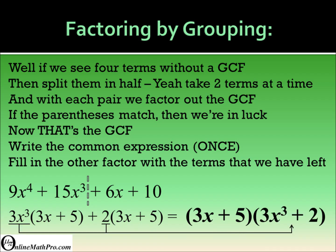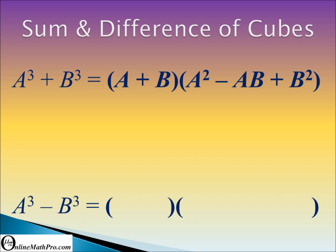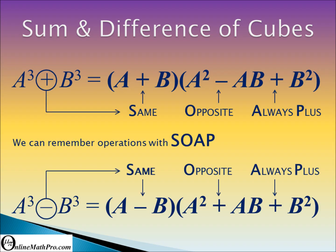A cubed plus B cubed: A, B, A squared, AB, B squared - plus, minus, plus. A cubed minus B cubed: A, B, A squared, AB, B squared - minus, plus, plus. We can remember the operations as: same, opposite, always plus.